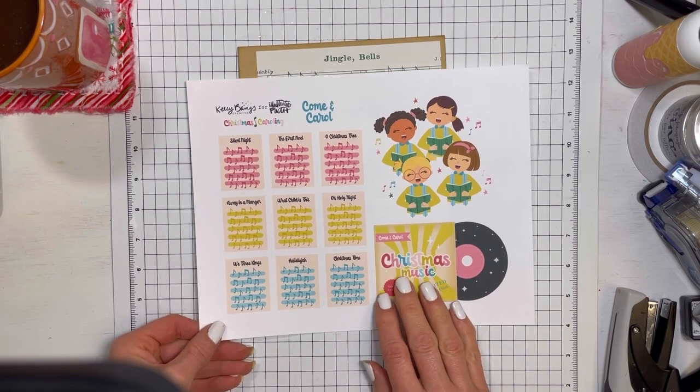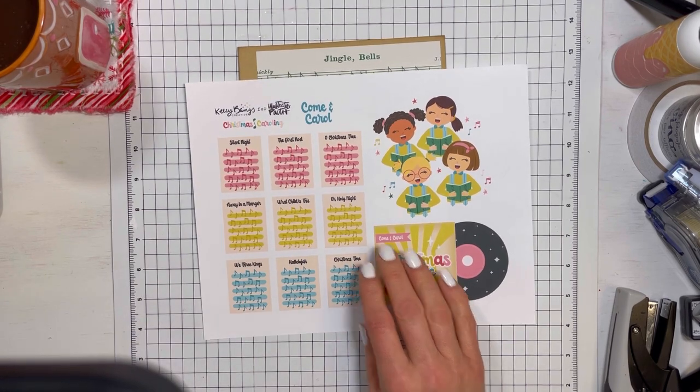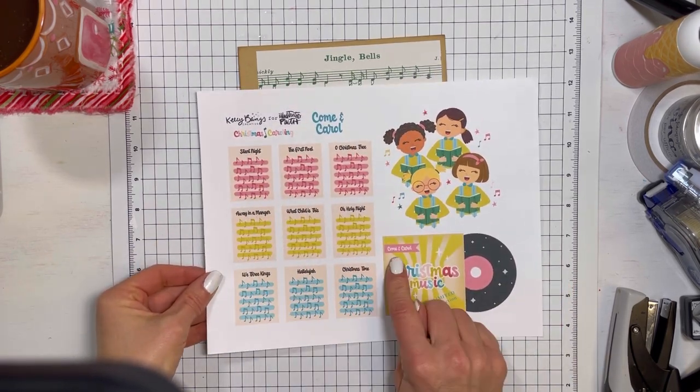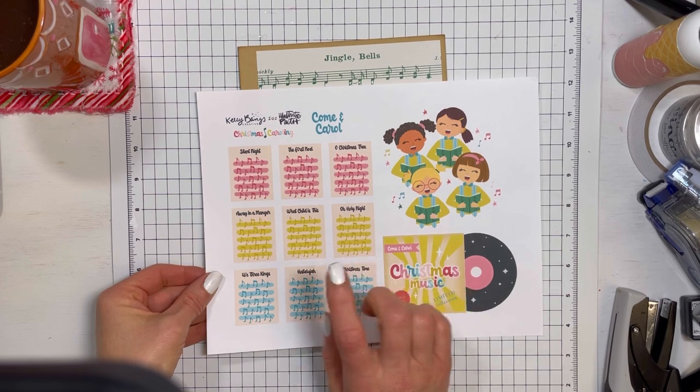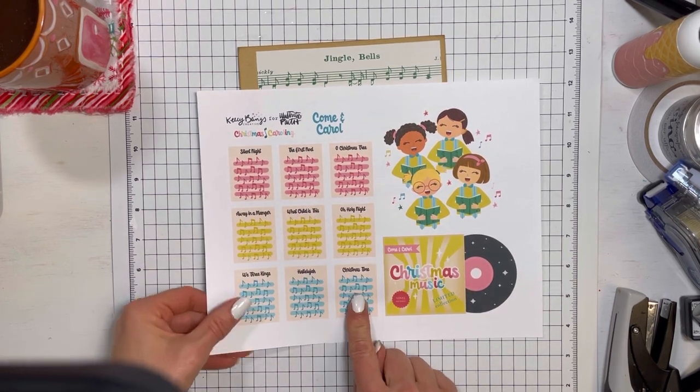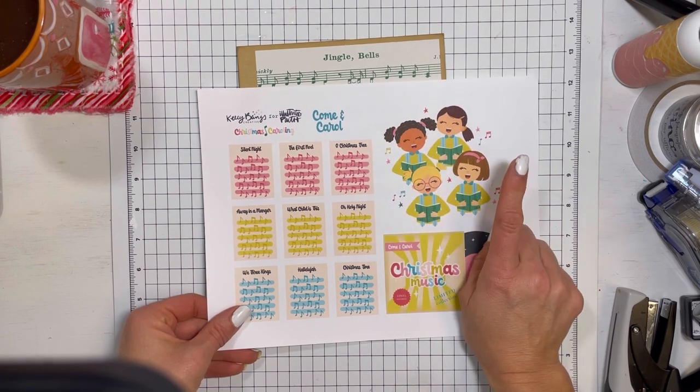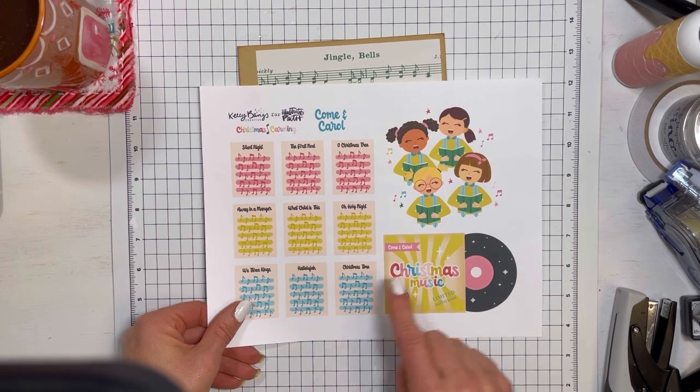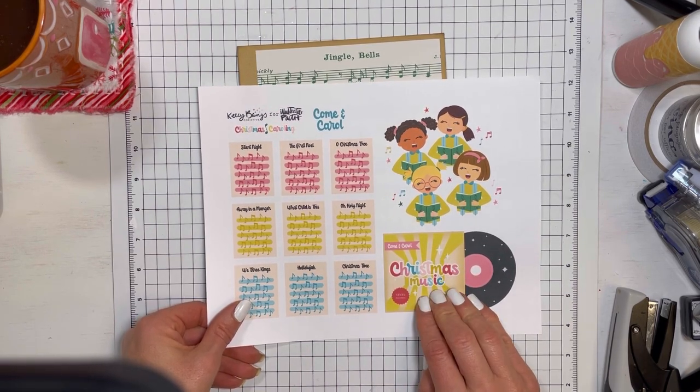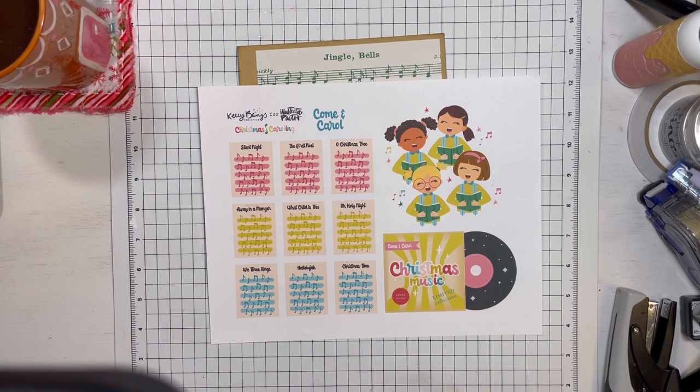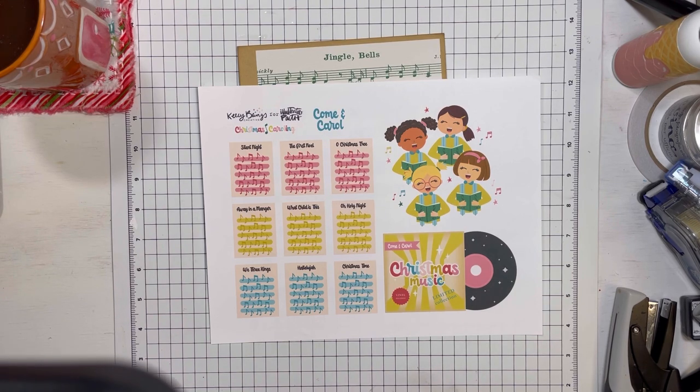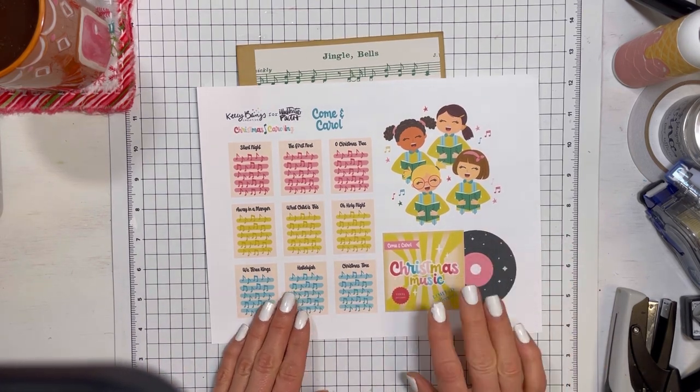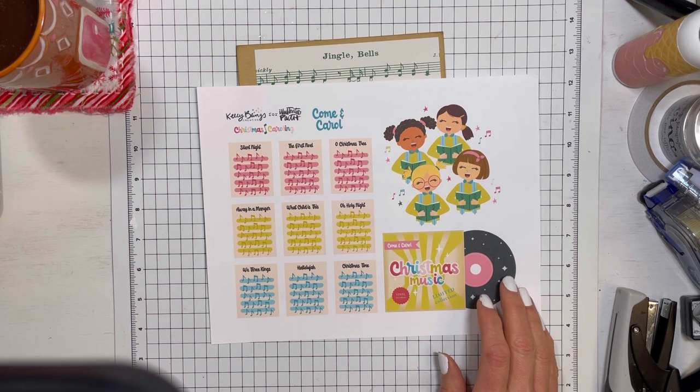I just think this is the cutest little thing. I'm not sure exactly how we're going to do it. We're going to do this together, but I think I'm going to cut out, I'm going to cut these out somehow and this little guy for sure, not sure if we'll use these adorable little carolers, but definitely I want the music and the songs and the Christmas music, the album. Isn't that just the cutest thing ever? So let's go ahead and get busy.